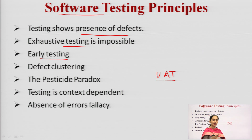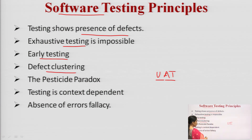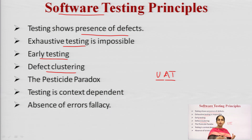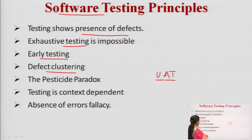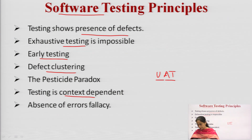If defects are found at later stages during acceptance testing, the cost becomes high. Defect clustering is another principle of testing. Then there is the pesticide paradox, context-dependent testing, and the absence of errors fallacy.